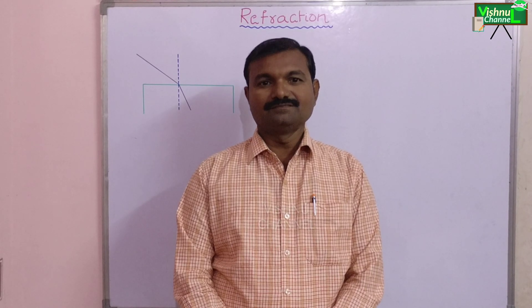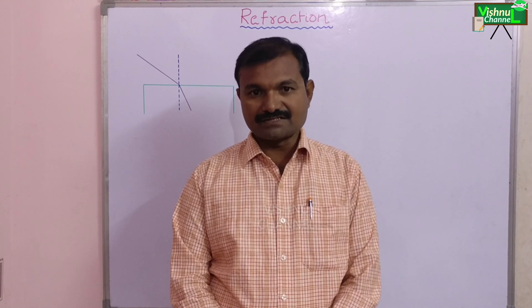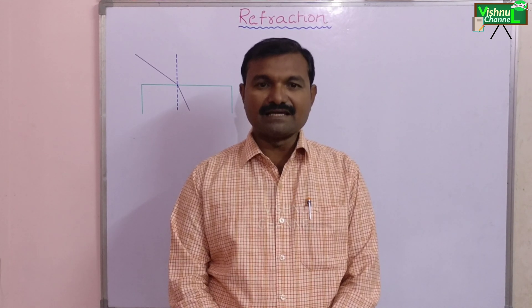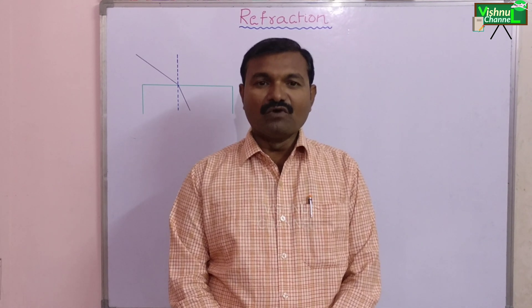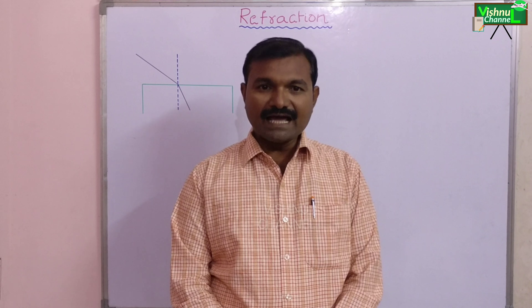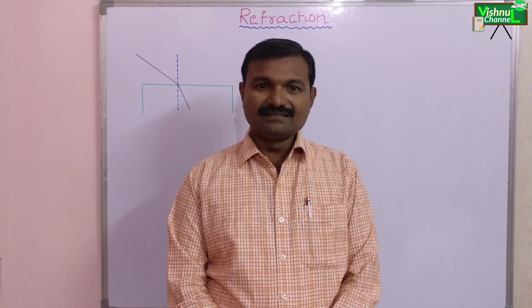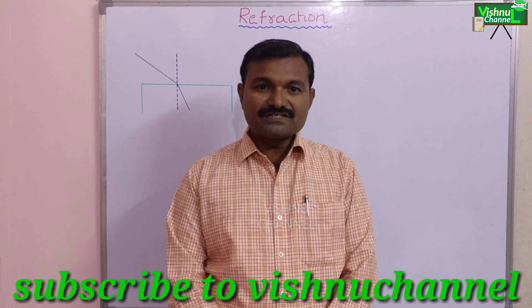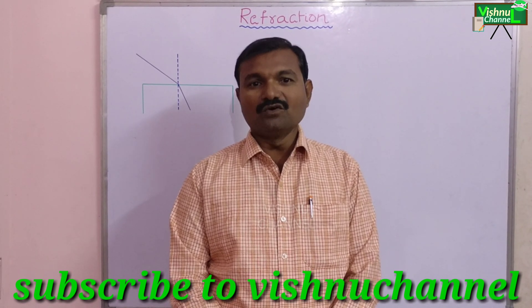Hello students. In this session we are going to learn about one of the characteristics of light. Already we know light is a form of energy, emitted by luminous bodies. Luminous bodies are two types: one is natural, another one is artificial. The natural luminous bodies are like stars, some insects, some fishes — they naturally emit light. The artificial are bulbs, candles, etc.